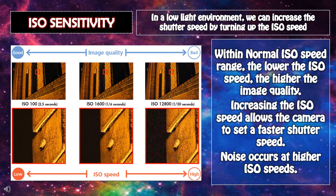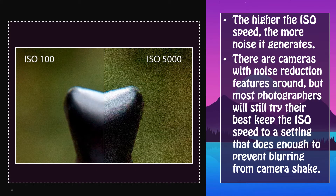ISO sensitivity. In a low-light environment, we can increase the shutter speed by turning up the ISO speed. Within the normal ISO speed range, the lower the ISO speed, the higher the image quality. Increasing the ISO speed allows the camera to set a faster shutter speed. However, noise occurs at higher ISO speeds — the higher the ISO speed, the more noise it generates. There are cameras with noise reduction features, but most photographers will still try their best to keep the ISO speed to a setting that does enough to prevent blurring from camera shake.